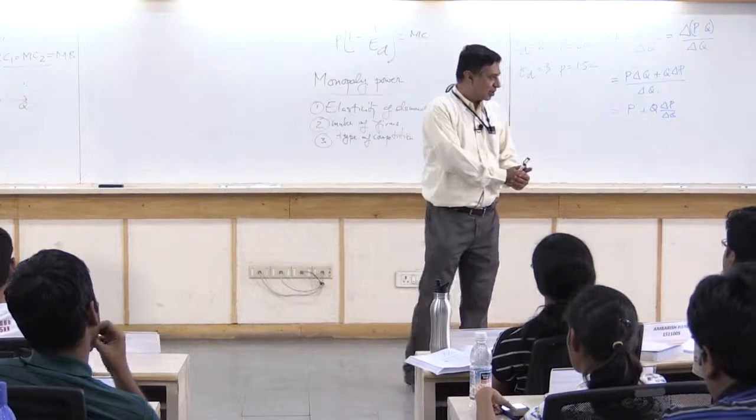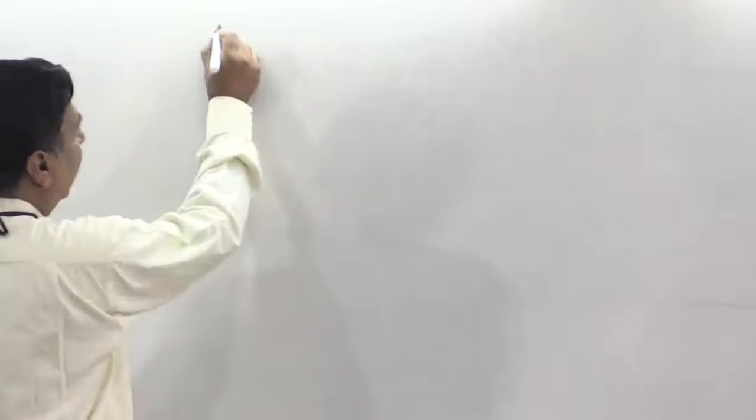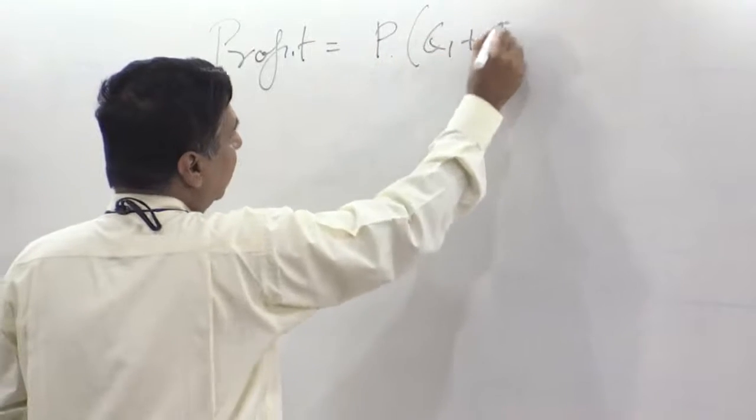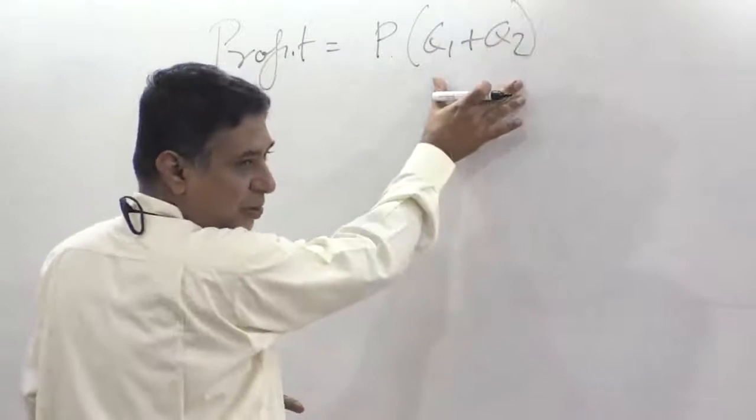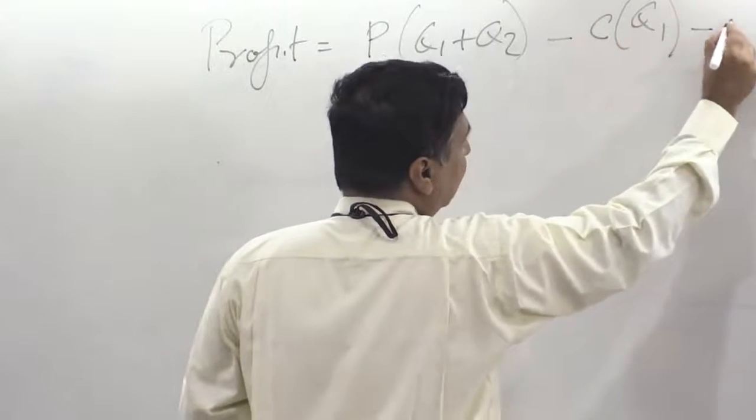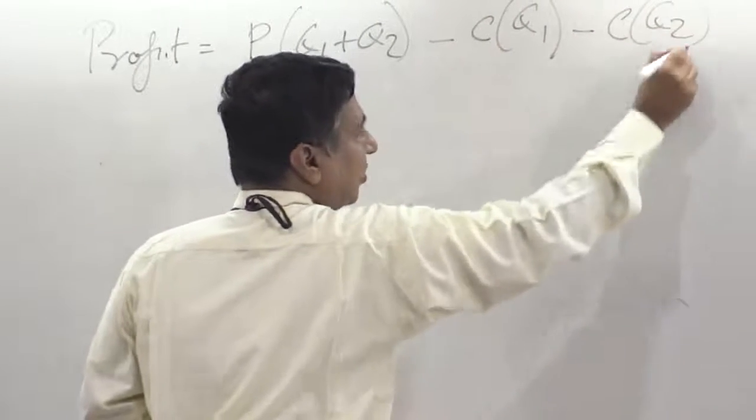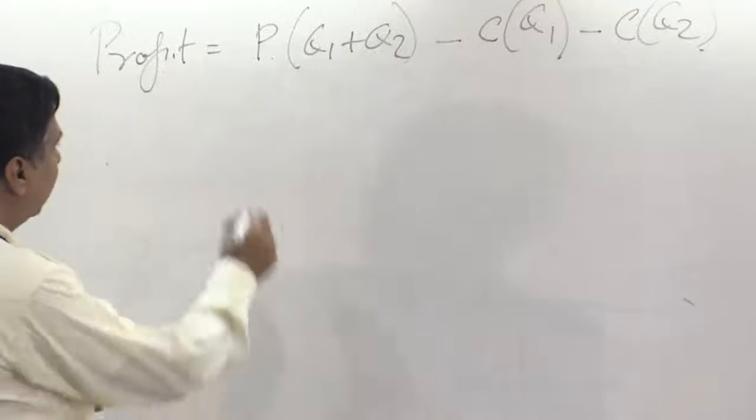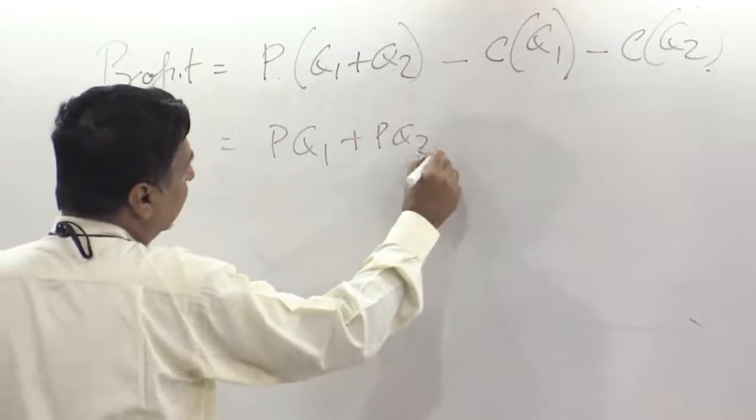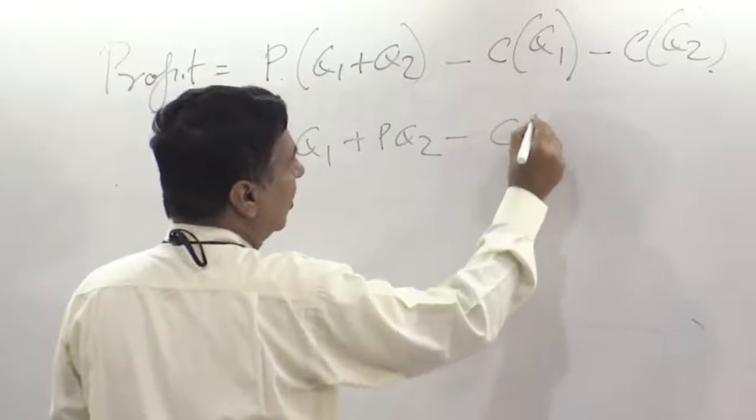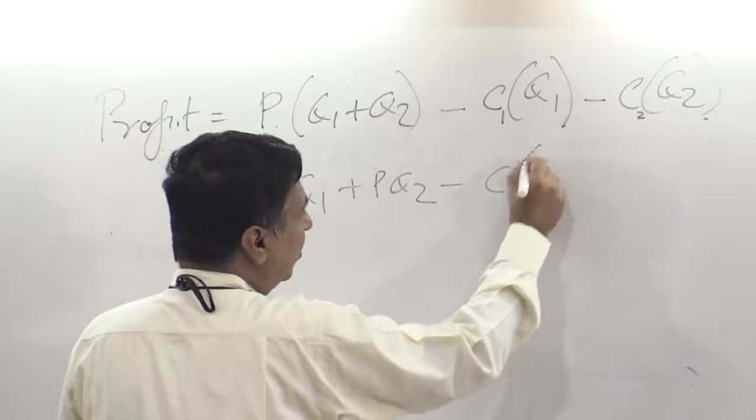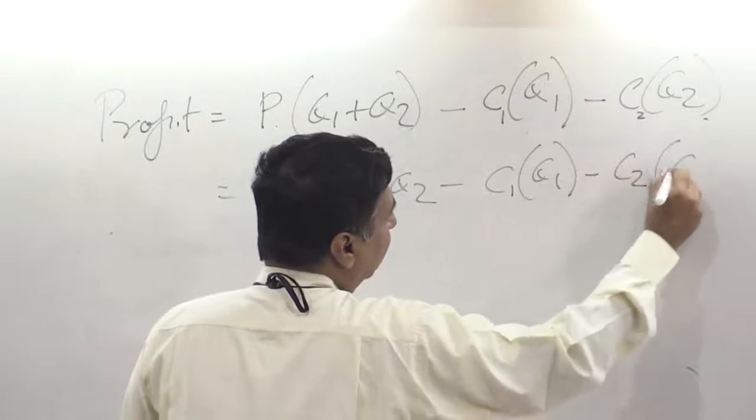So let me say profit is equal to P into Q1 plus Q2, that is the total output you are producing, minus the cost of Q1 minus the cost of Q2. So this is equal to P times Q1 plus P times Q2 minus C1 and C2, different cost functions. So C1 of Q1 minus C2 of Q2.